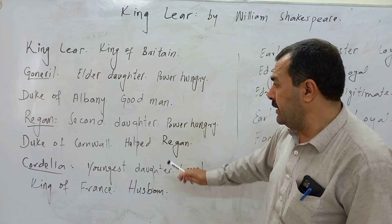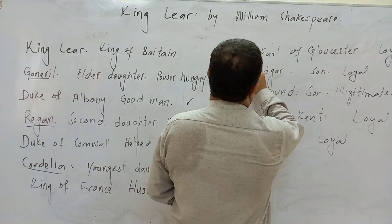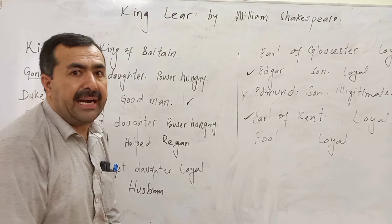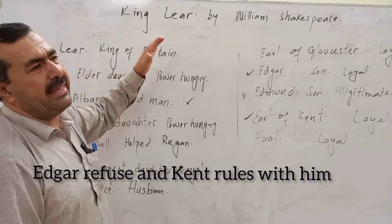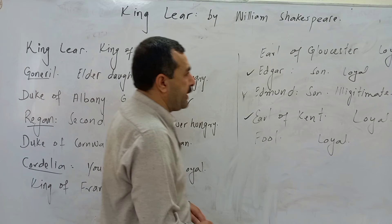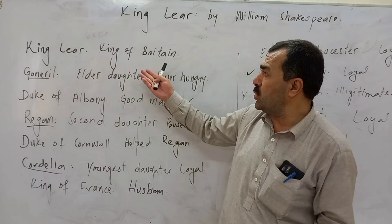So the stage was full of deaths: Goneril, Regan, Cornwall, Cordelia, King Lear, and some others. Who was remaining? The surviving people were Edgar, Kent, and the Duke of Albany. The three decided to rule the kingdom and bring a final end to the civil war. Edgar refused because he was very upset and close to the events. So Kent and the Duke of Albany decided to rule the kingdom together, and they gave a better future to the people. That was the end of Act Five.